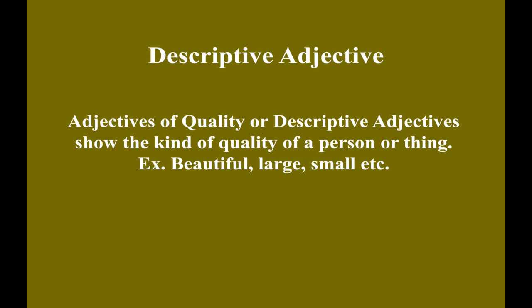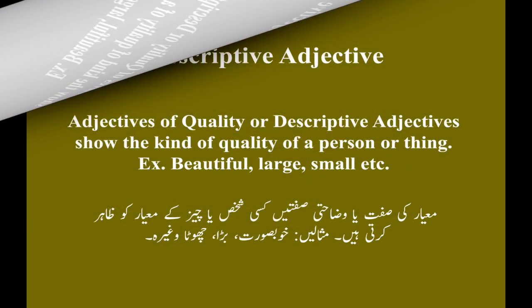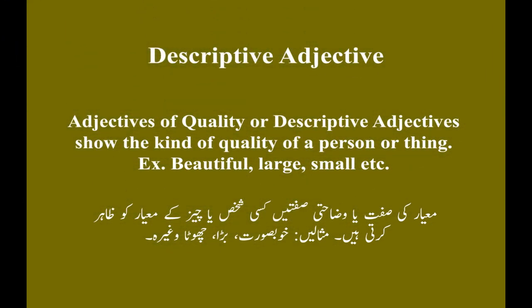Adjectives of quality, or descriptive adjectives, show the kind or quality of a person or thing. Examples: Beautiful, Large, Small, etc. Moier ki sifti ya wazahti sifti kishi shaks ya chiz ke moier ko zahir kerti hai. Musali: khubsoorat, bada, chhota, woghaira.